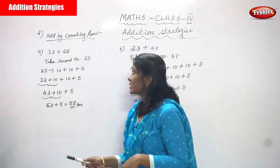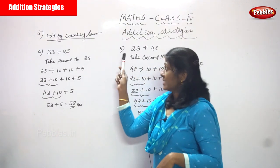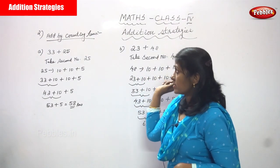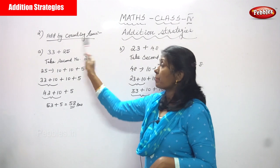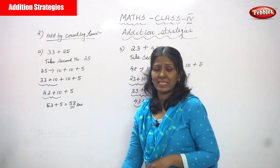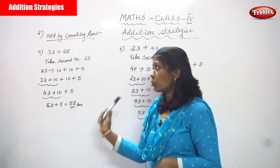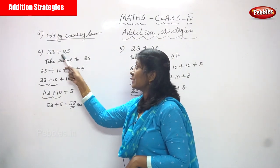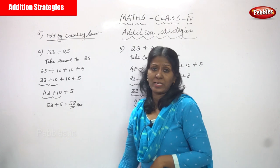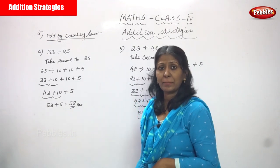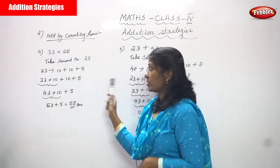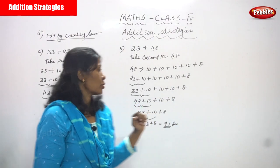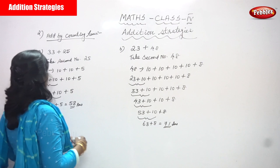Now we are going to see addition strategies — the same addition strategy: add by counting tens. Look at the number 33 plus 25, the first question. Let's solve the sum.